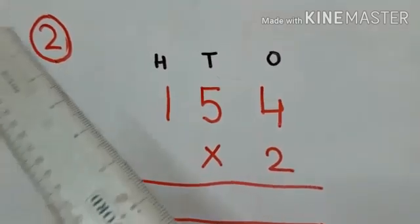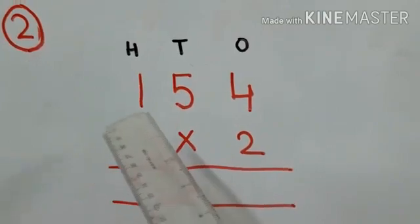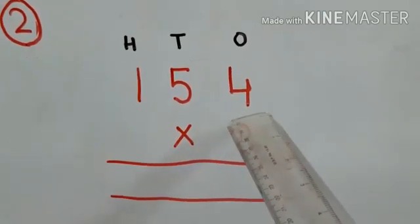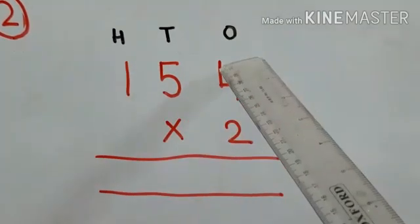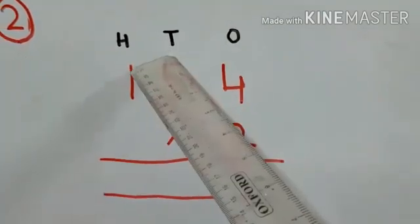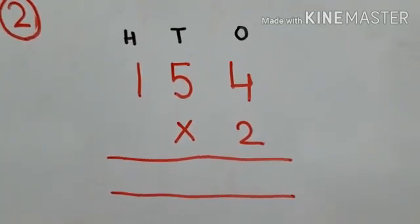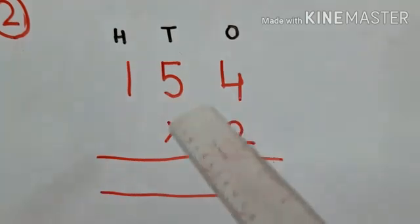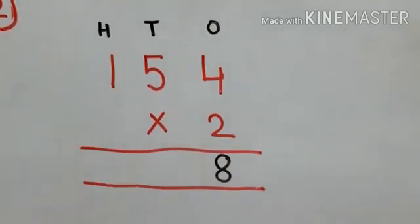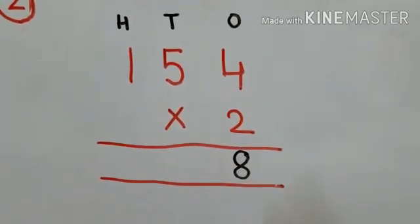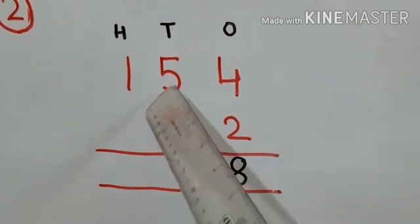Now coming to question number 2. We are having 154 and we have to multiply with 2. The ones, tens, and hundreds digits are already mentioned. We have to multiply 2 with the ones-digit number first. So two fours are 8. Then we have to multiply with the tens-digit number that is 5.